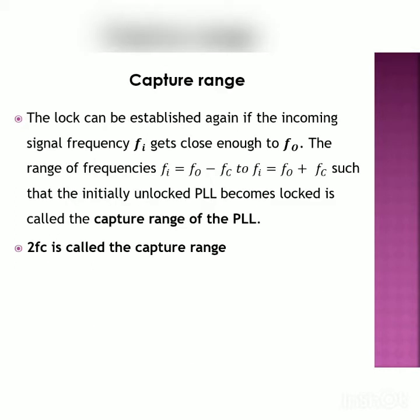Capture range: the lock can be established again if the incoming signal frequency Fi gets close enough to the free running frequency. The range of frequency Fi from FO minus FC to FO plus FC, where an initially unlocked PLL becomes locked, is called the capture range of the PLL. Twice FC is called the capture range.